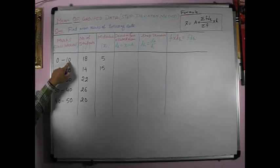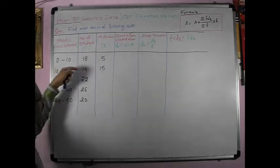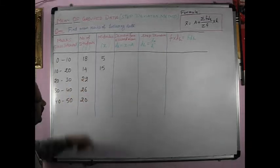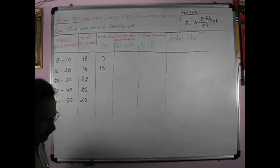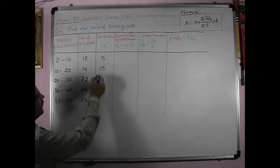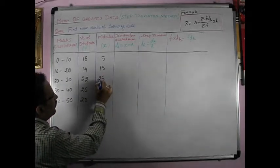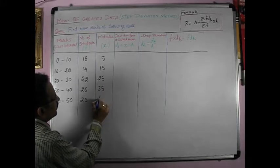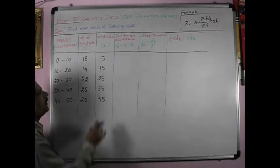Now, we will see the difference. 10 minus 0 is 10. Then, we have to add this difference again and again successively. So, we will get the mid-value of other terms. So, we see 15 plus 10, 25. 25 plus 10, 35. 35 plus 10, 45. So, we have got the mid-value.